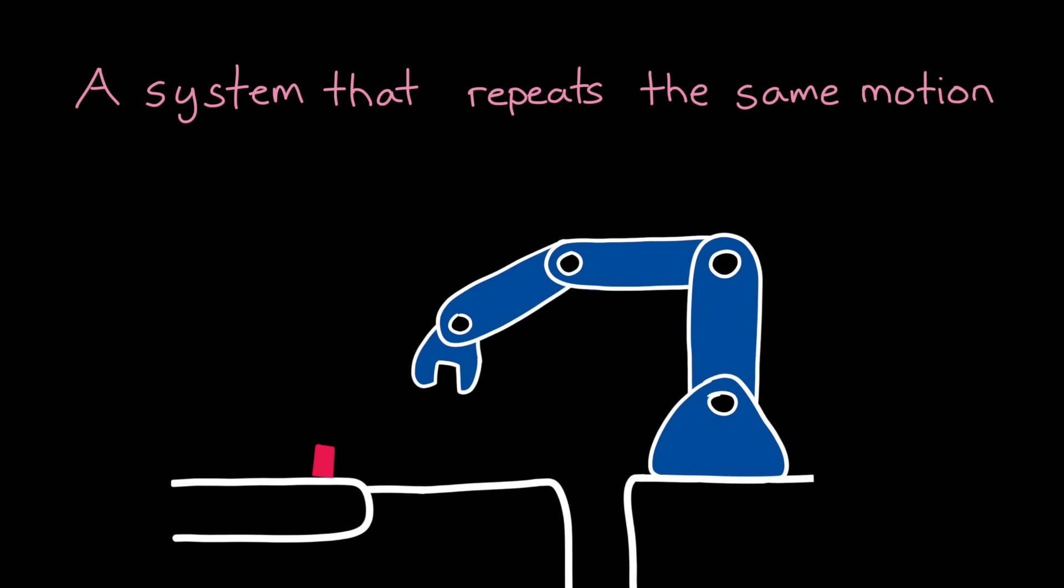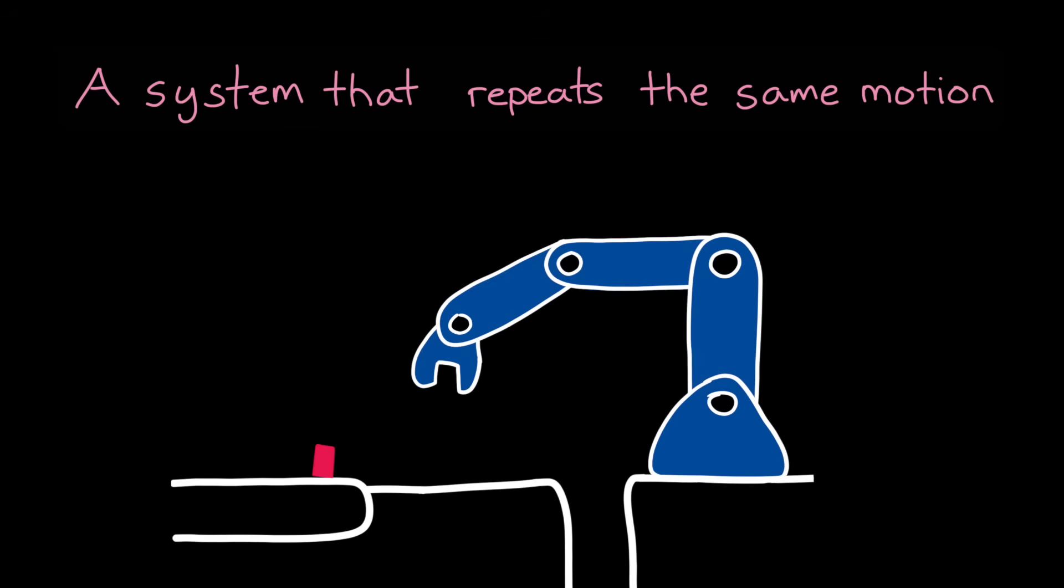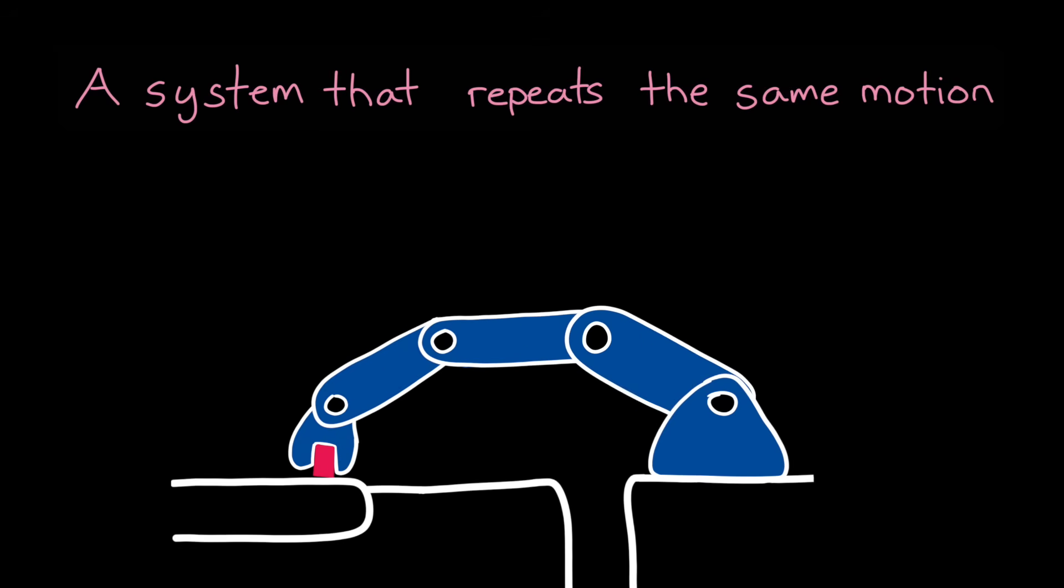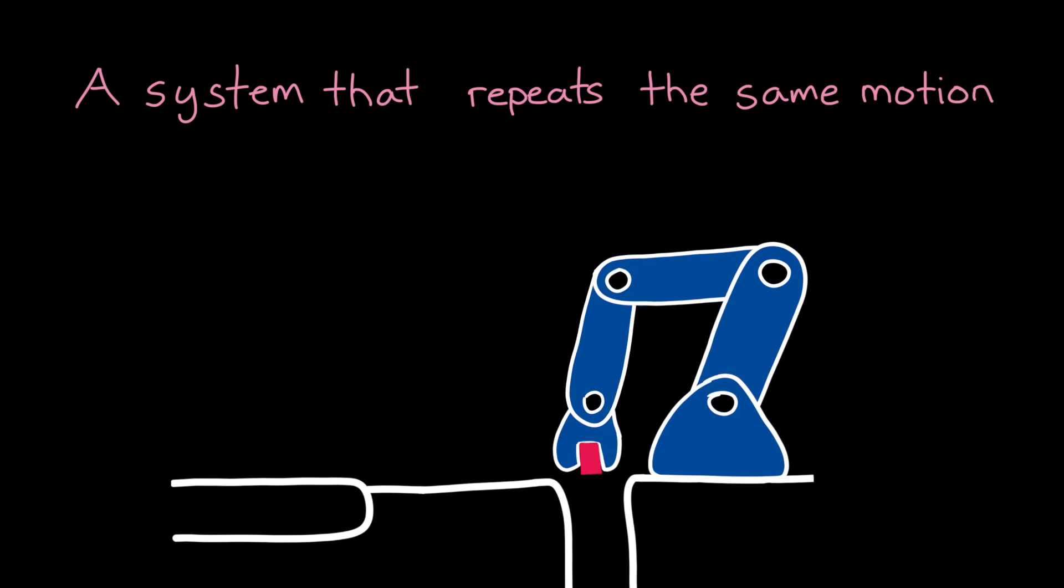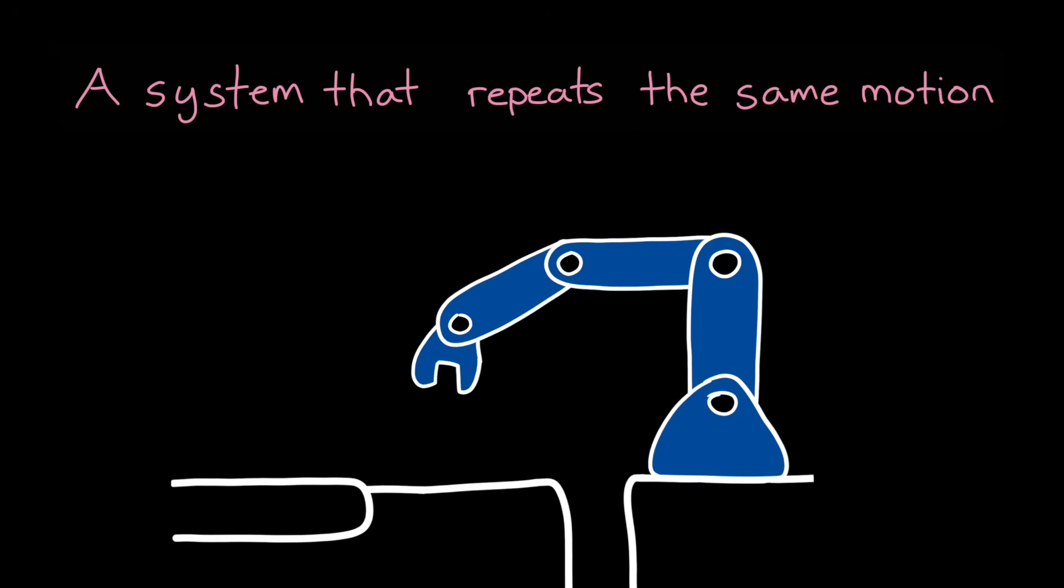Imagine you're trying to get a system to repeat the same motion through the same environment over and over again. For example, think about a pick-and-place robotic arm. The arm starts at some known point, and then it moves to pick up a piece, and then it places it somewhere else, and then moves back to the starting point where it waits until the next iteration.